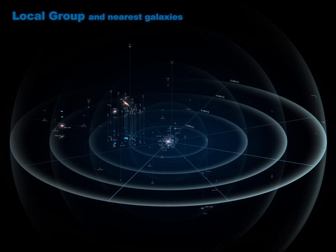Measurements with the Hubble Space Telescope in 2006 suggest the Magellanic clouds may be moving too fast to be orbiting the Milky Way.